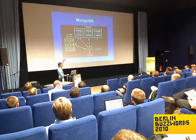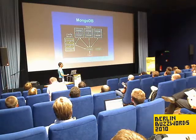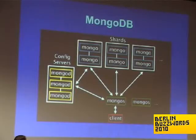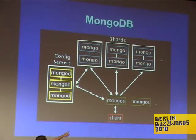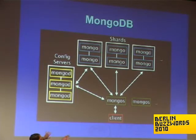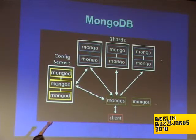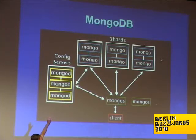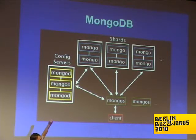This is the 10,000-foot overview of what Mongo looks like. You have clients connecting to these Mongo servers, and they communicate with the config servers to figure out the mapping of which keys go to which sets of machines. On the back end you have shard machines, or they can be shard clusters.